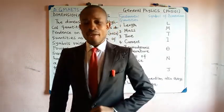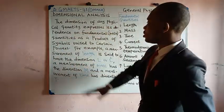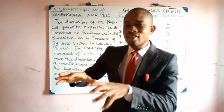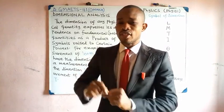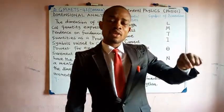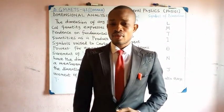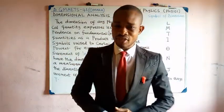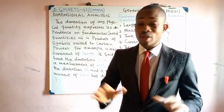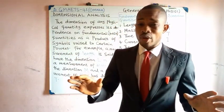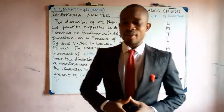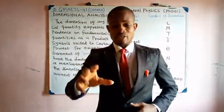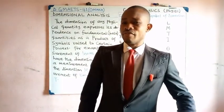The dimension of a physical quantity simply expresses the dependence of that physical quantity on fundamental quantities as a product of symbols raised to a given power. That is what the dimension of a quantity is. One may ask you the dimension of a particular quantity, for example a derived quantity — let us say velocity.